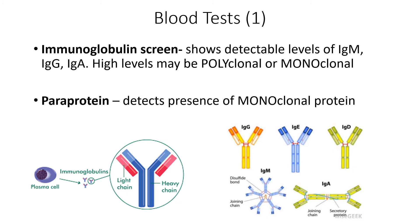The paraprotein test will detect the presence of a monoclonal protein. If there is no monoclonal protein, you won't see anything in the results, but if there's something there, it will quantify it in grams. The diagram on the right shows that IgG, IgE, and IgD are all monomers, IgA is a dimer, and IgM is a pentamer — five of them stuck together in a wheel-like structure.